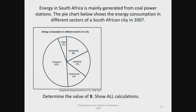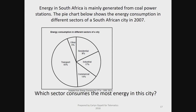Here's the type of question you can have on this. Energy in South Africa is mainly generated from coal power stations. A pie chart shows the energy consumption in different sectors of a South African city in 2007. You must determine the value of X. This is a pie chart — everything should add up to 100%. Take your 100%, deduct all the other values, and you will get X, which is 18%.